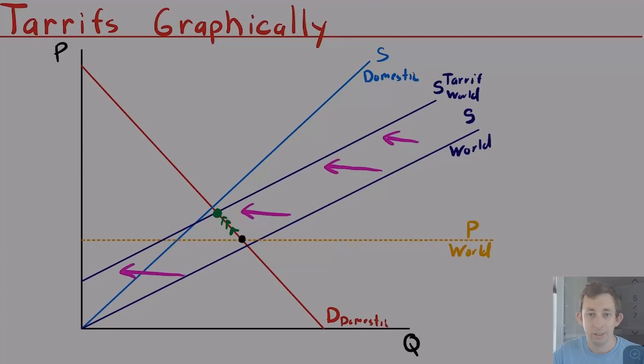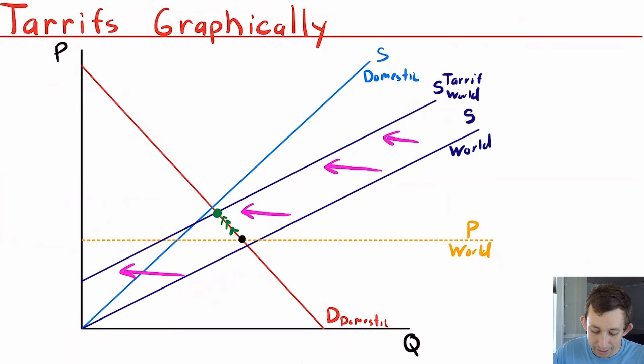Now, just like a tax, what's going to happen is the rest of the world supply curve is shifting left because we're making the rest of the world's imports, the rest of the world's donuts, more expensive. So we're bringing it closer to our original domestic equilibrium. So now you can see that before our imports were really high.